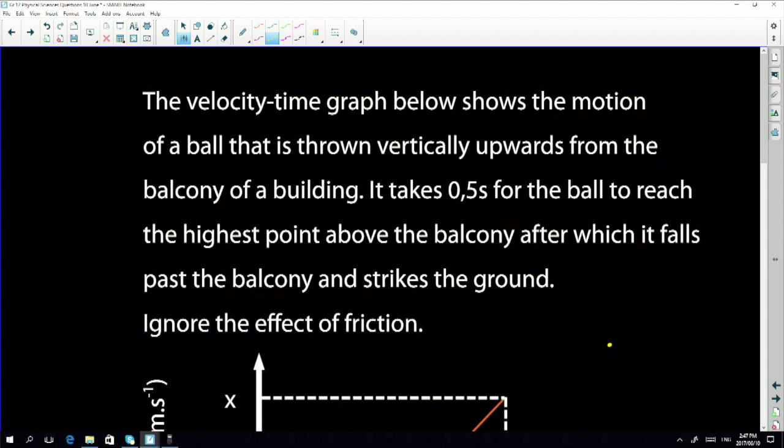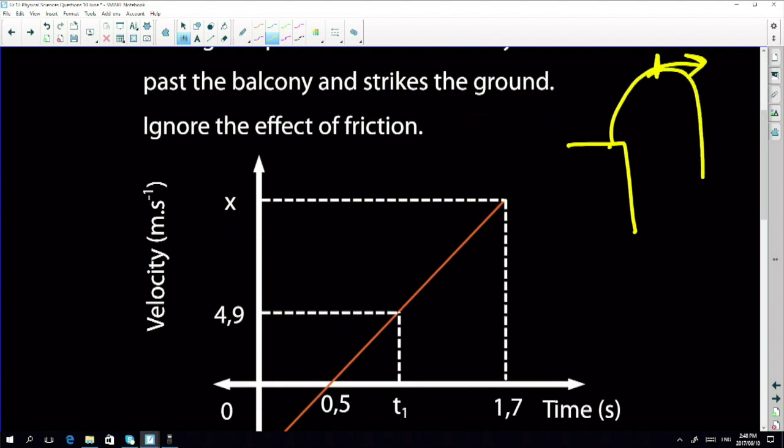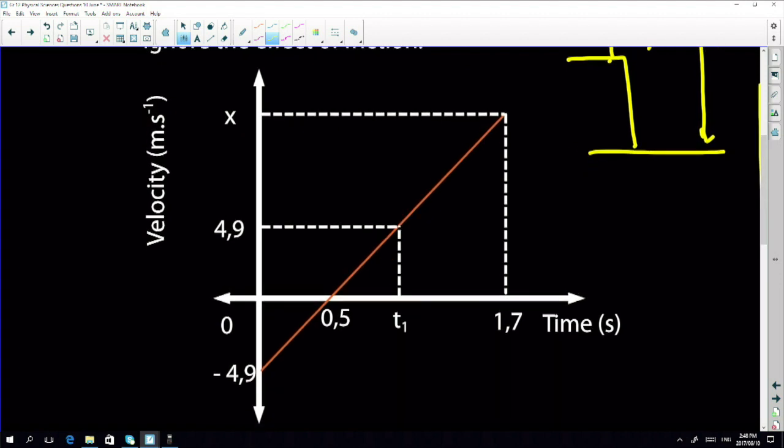They give you a velocity graph that shows the motion of a ball that is thrown upwards from a balcony of a building. You have a building, the object is thrown upwards. It takes 0.5 seconds for the ball to reach the highest point above the balcony, after which it falls past the balcony and strikes the floor.